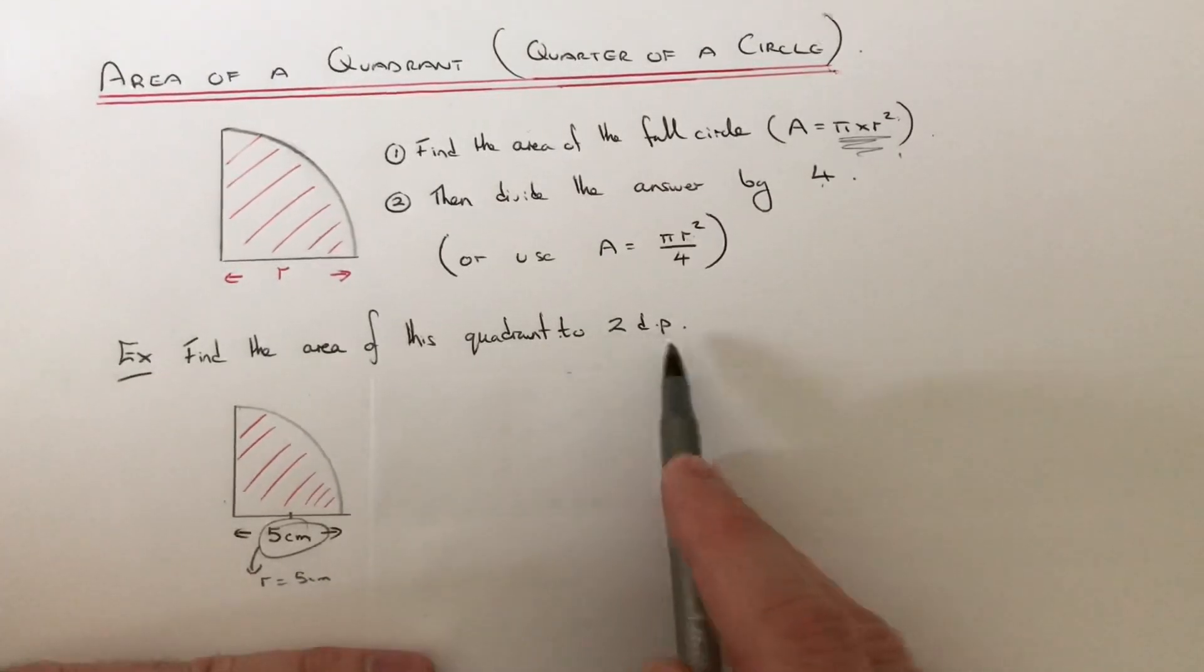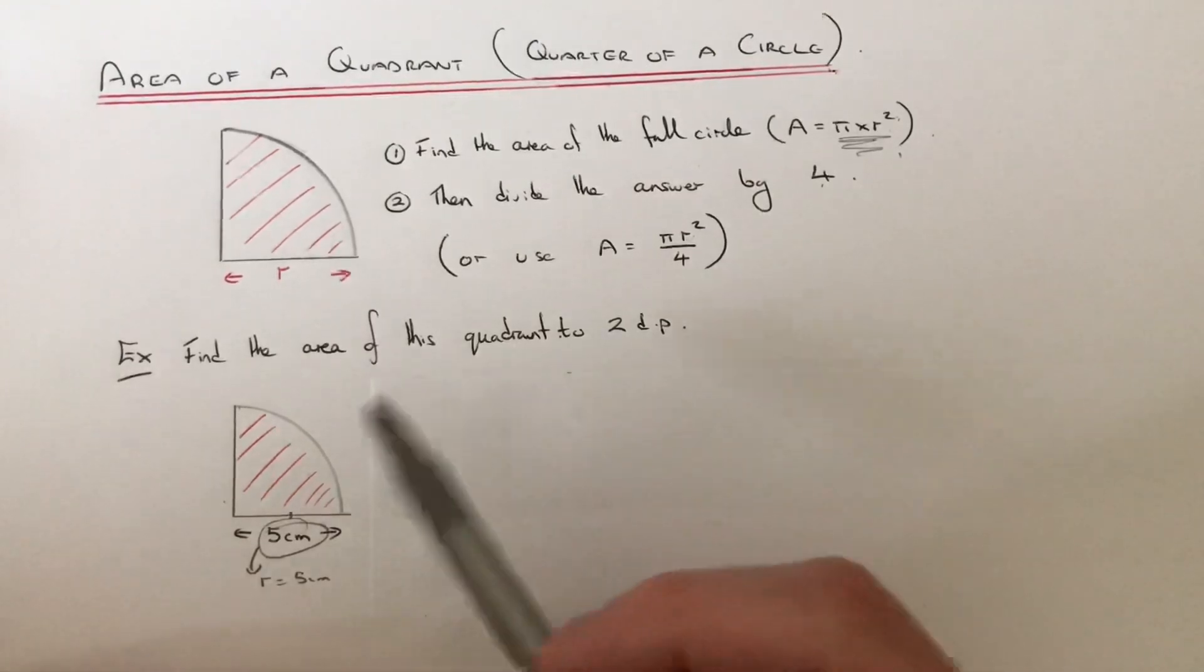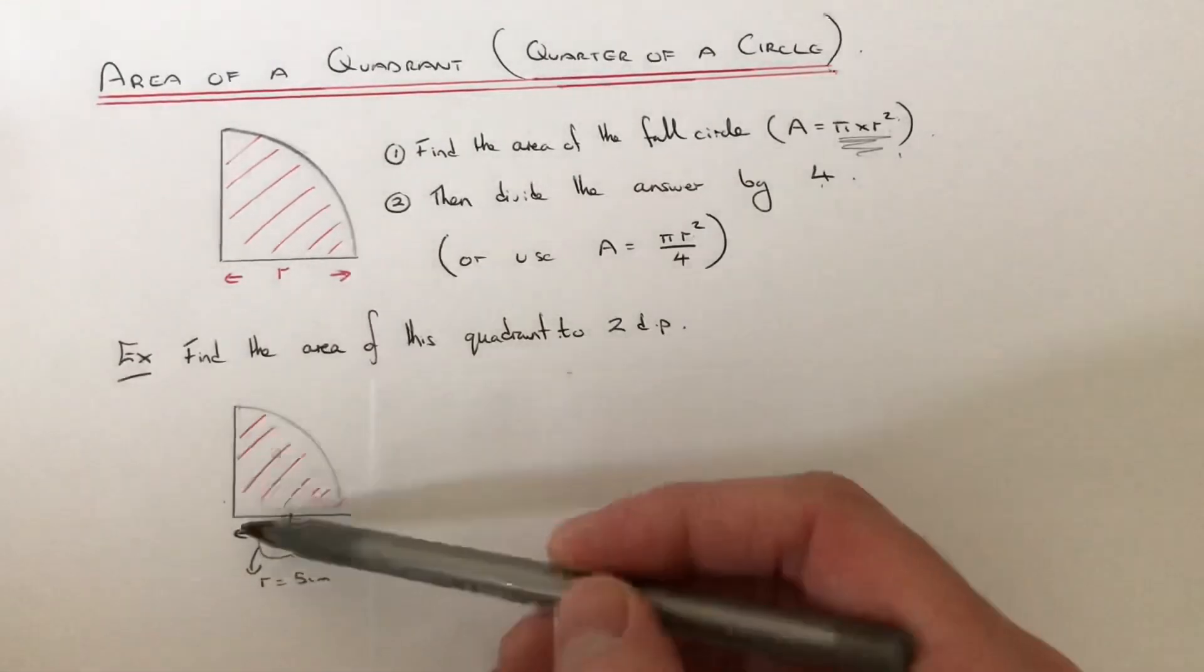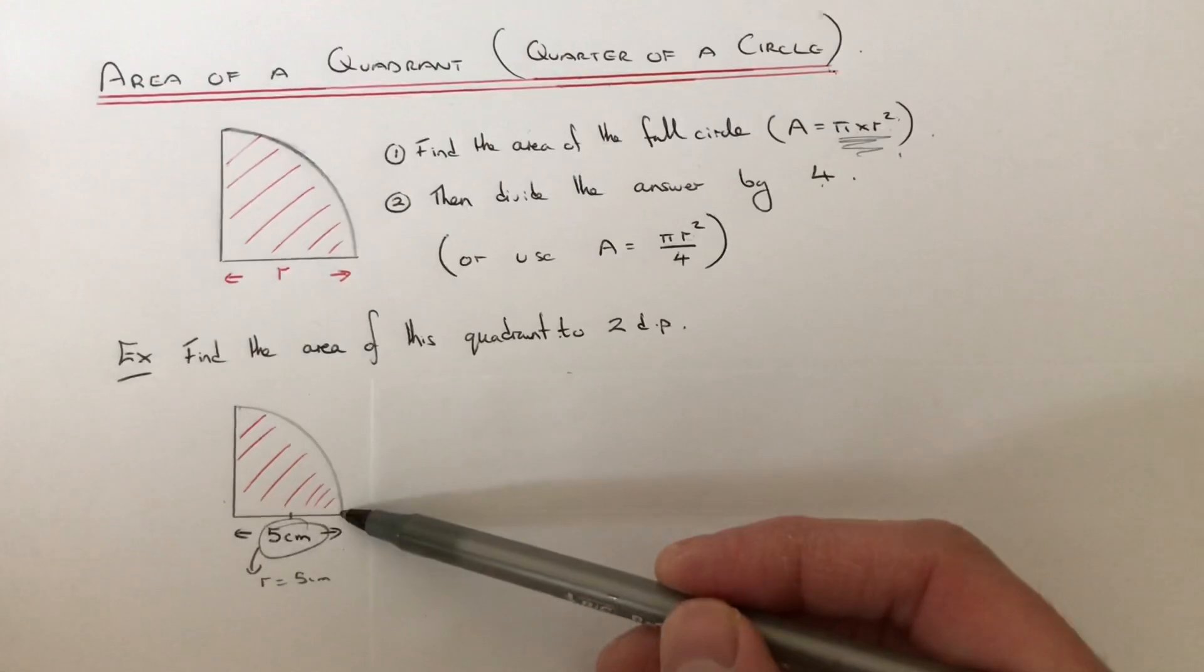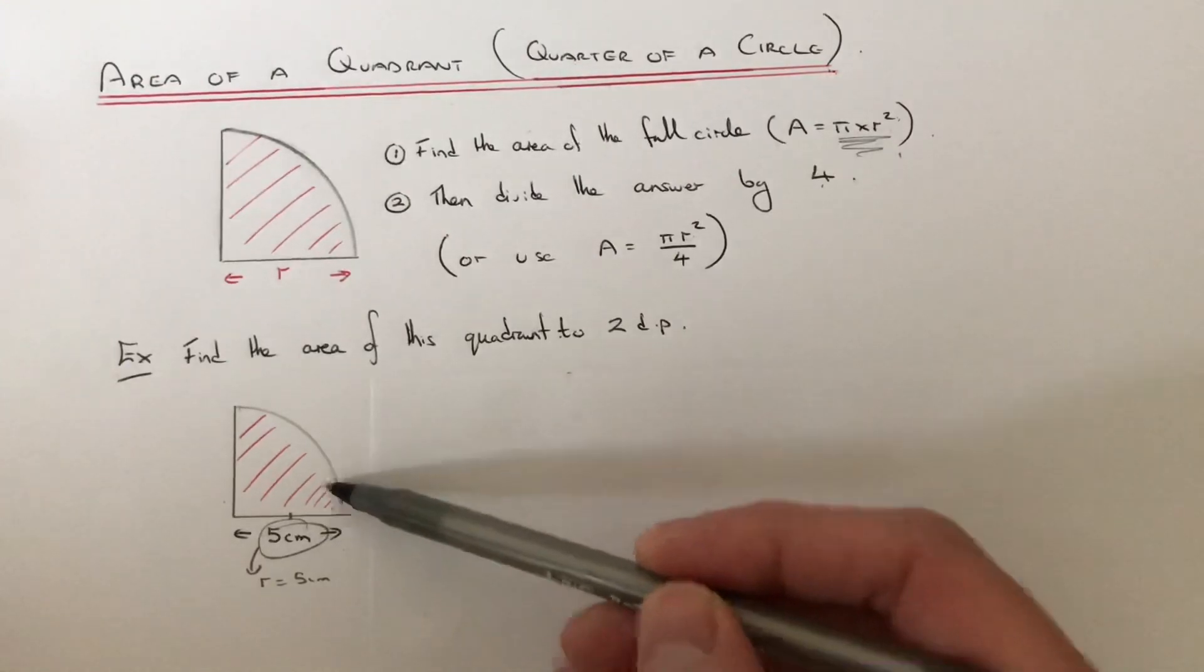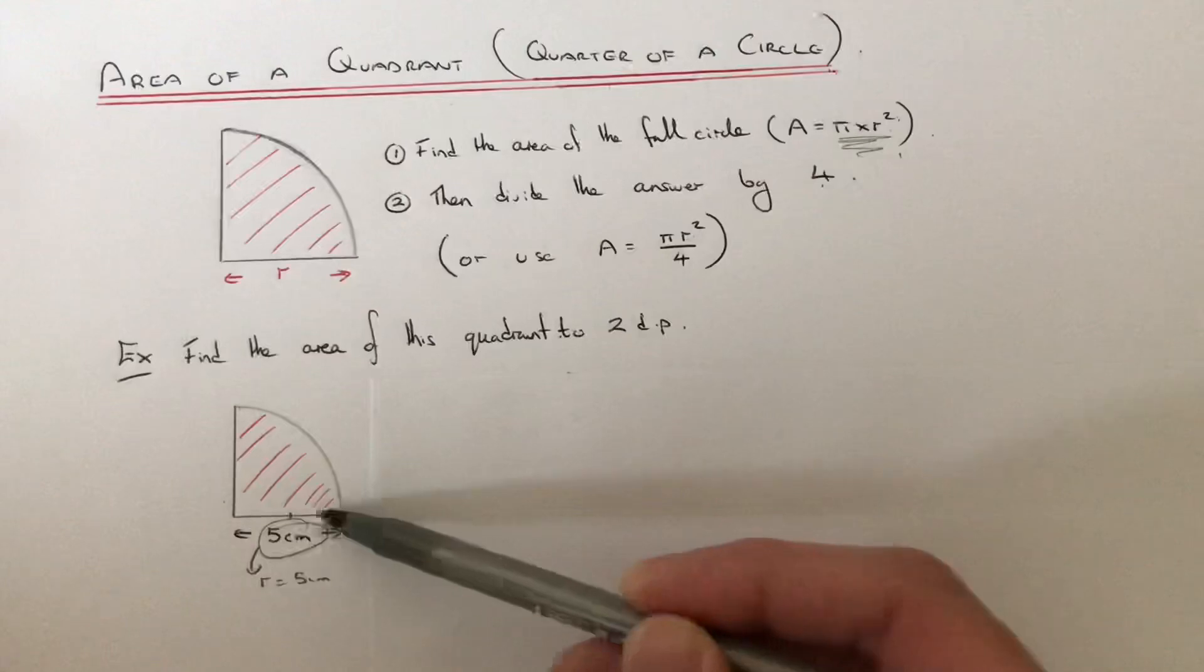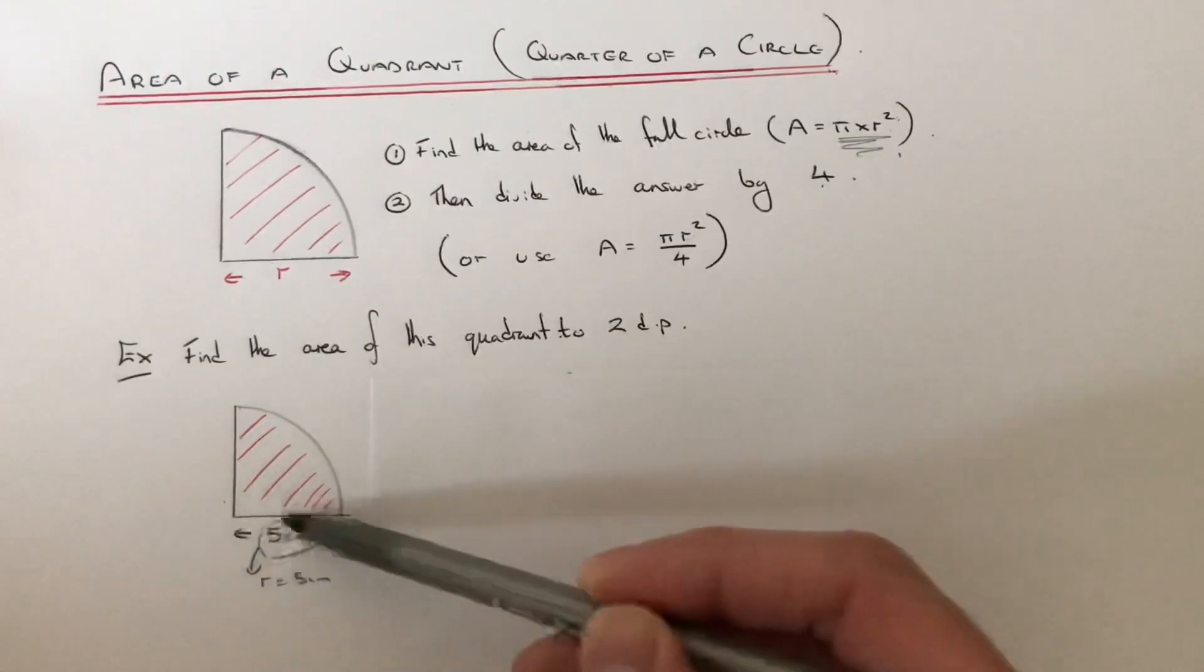So we've got to work out the area of these quadrants to two decimal places. So our quadrant has a radius of 5 centimeters. Because if we imagine the full circle then this will be the radius because it's halfway across the full circle.